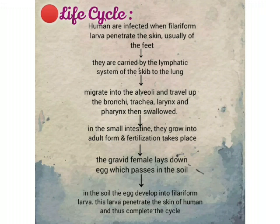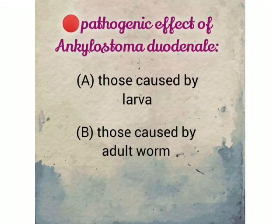From the alveoli, the larvae travel through the bronchi, trachea, larynx, and pharynx, and are then swallowed into the small intestine where they grow into adult form. Fertilization takes place and the gravid female lays eggs which pass into the soil. In the soil, the eggs develop into filariform larvae, which then penetrate the skin of a human host to complete the cycle.